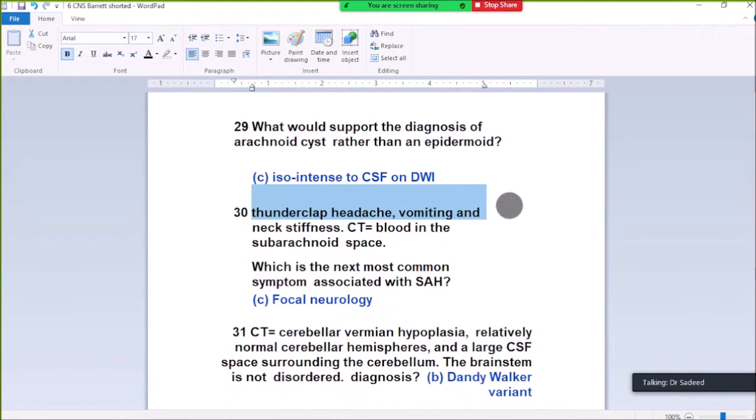Question 30. Thunderclap headache, vomiting and neck stiffness due to presence of blood in the subarachnoid space. What is the next most common symptom associated with subarachnoid hemorrhage? Focal neurological deficit. Patients have subarachnoid hemorrhage with blood in subarachnoid spaces, and the next most common symptom is focal neurological deficit.